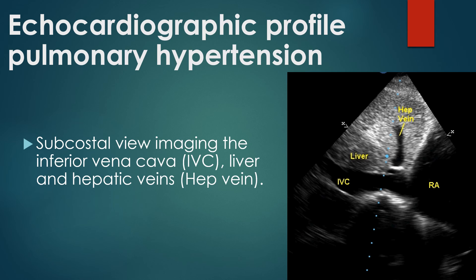Subcostal view imaging the inferior vena cava, liver, and hepatic veins. The inferior vena cava was dilated and showed little collapse with inspiration, known as IVC plethora, indicating high venous pressure. Normally, the respiratory variation in IVC size is more than 50%, with inspiratory collapse expected.